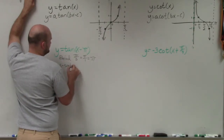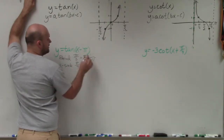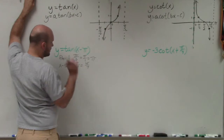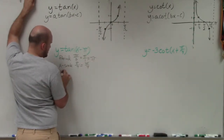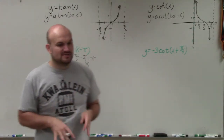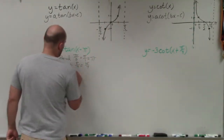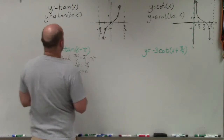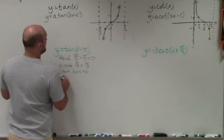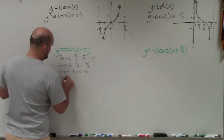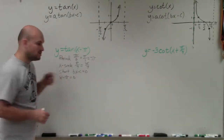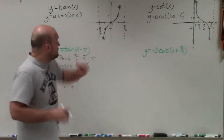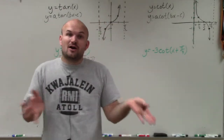Next we're going to find our x scale, which is going to be our period divided by 4. Here, our period is pi, so x scale is pi divided by 4. But since we have a phase shift, we're going to find our start. Just like we did with sine and cosine, we're going to take what's inside your function and set bx minus c equal to 0. So in this case, x minus pi equals 0. Solving for x, I add pi and get x equals pi. So rather than starting at 0, I'm going to start at pi.